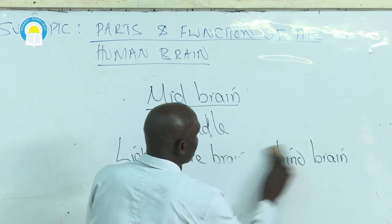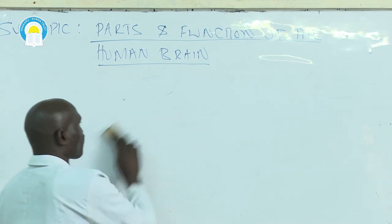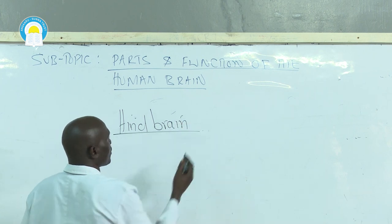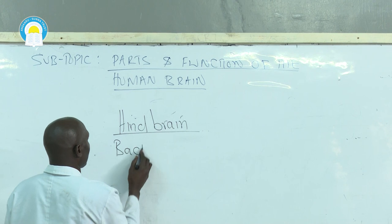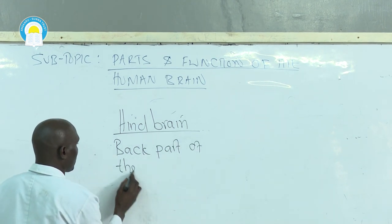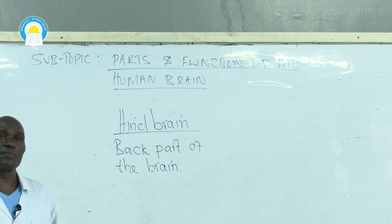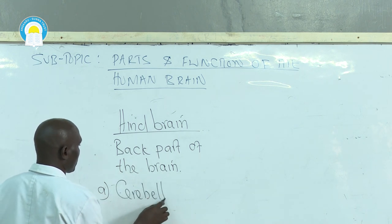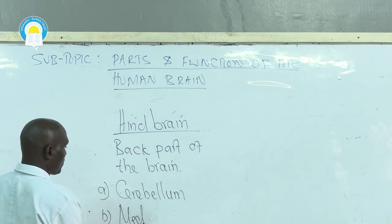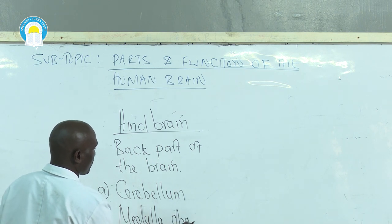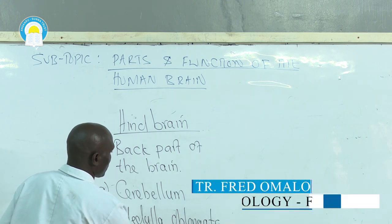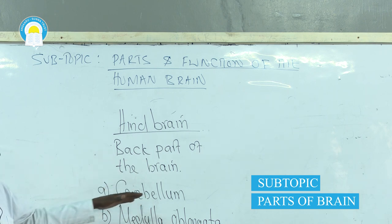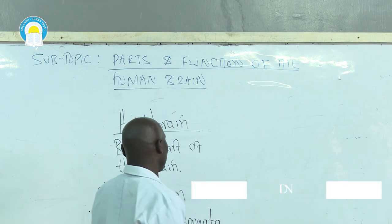The other part of the brain is the hindbrain, the back part of the brain. The hindbrain comprises two major parts, namely cerebellum and medulla oblongata. Let's start with cerebellum.